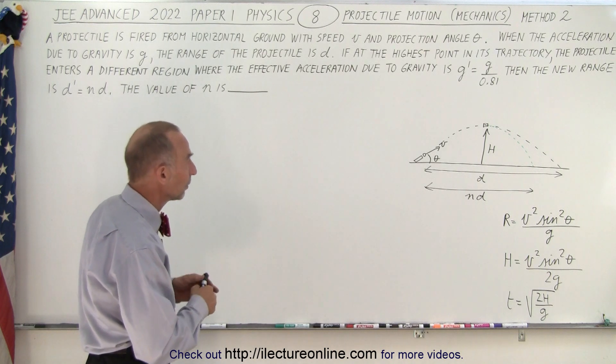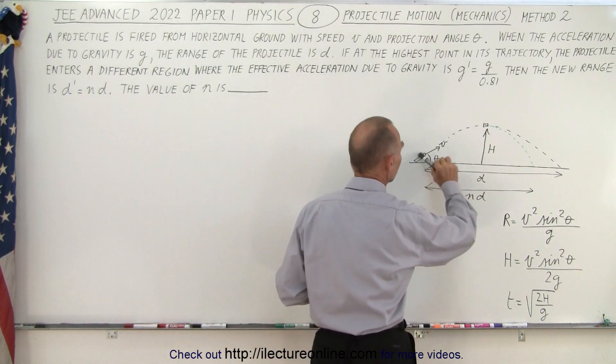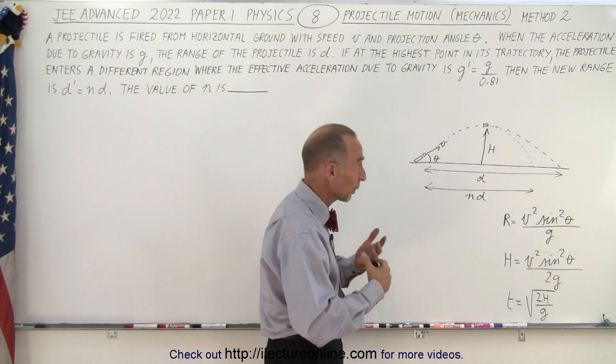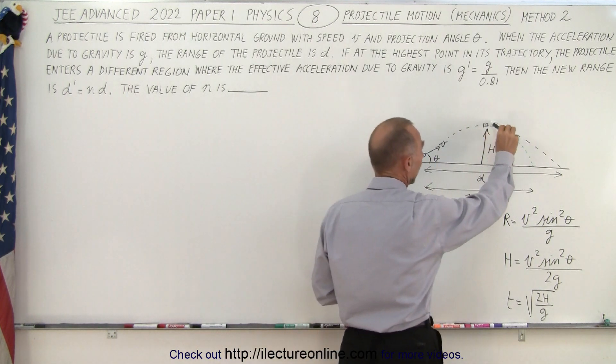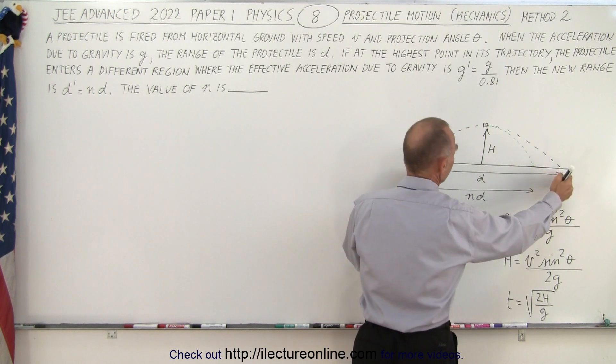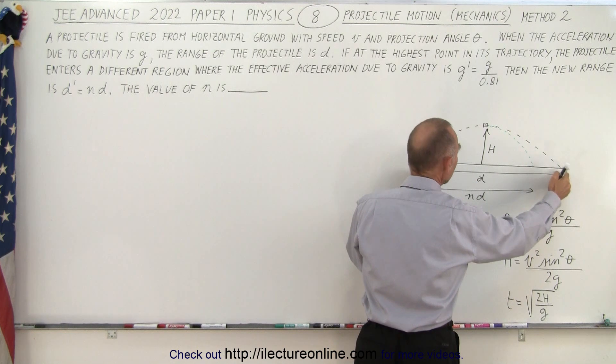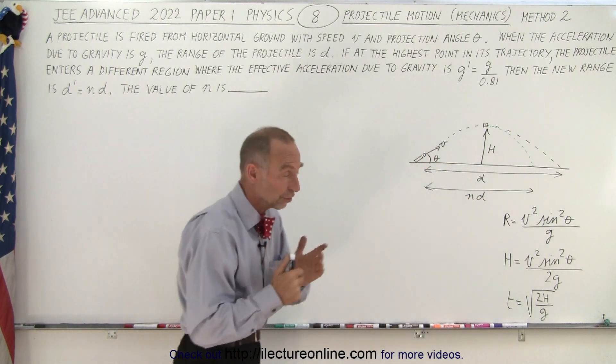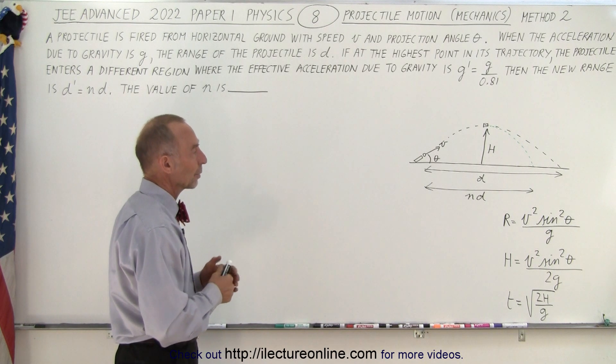Remember now in this problem that once the projectile reaches its maximum height, it now enters a region with a different acceleration due to gravity, a greater acceleration due to gravity, and the projectile will hit the ground sooner than it would have. So normally it would have covered the entire distance d, but now it's going to be some fraction of d. We're looking for the fraction of d.